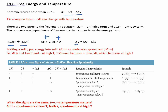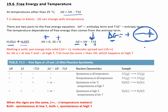Under what conditions will delta G be negative? In order to have a spontaneous reaction, delta G has to be negative. If delta H is positive and delta S is positive, it really depends on how large each one is. The only other variable you can change is temperature. So when does ice melt — under high temperatures or low temperatures? Obviously high temperatures. Delta G equals delta H minus T delta S: if delta H is positive, you need the negative T delta S term to be much larger to make delta G negative.